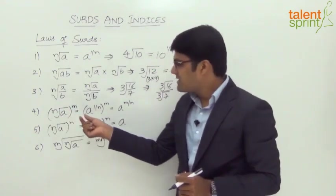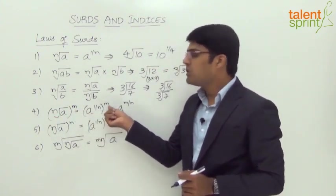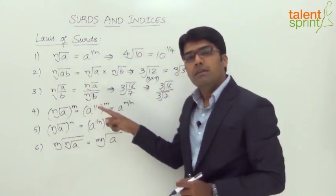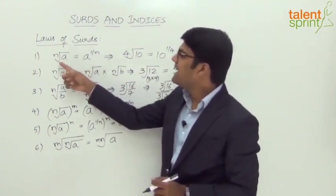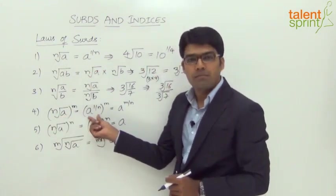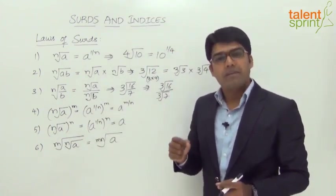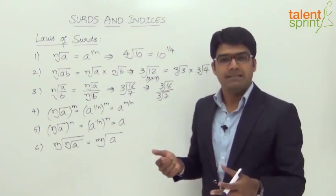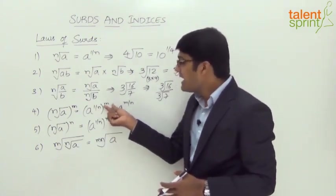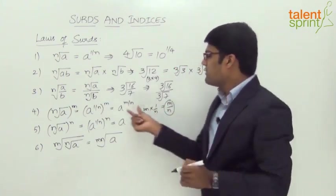Rule number four: the n-th root of a, raised to the power of m, can be expressed as a to the power of 1 by n, whole to the power of m. This rule is a combination of rule one with a law of indices. We know that the n-th root of a equals a to the power of 1 by n, so inside the brackets we have a to the power of 1 by n, raised to m. From the laws of indices, we know that a to the power of m, raised to n, equals a to the power of m times n — so the powers multiply. Therefore this becomes a to the power of m times 1 by n, which equals a to the power of m by n.